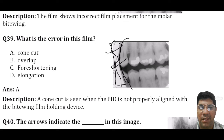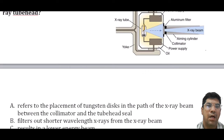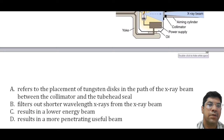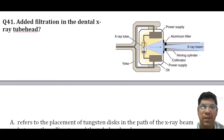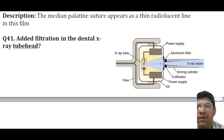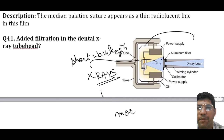The arrow indicates the median palatine suture — a line of union between the two halves of the palatal bone in the midline of the roof of the mouth. Added filtration in the dental x-ray tube head results in a more penetrating useful beam. Additional filtration in the path of the x-ray beam filters out short wavelength x-rays from the beam, resulting in a more penetrating and useful beam.